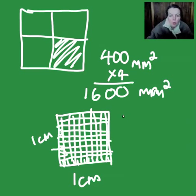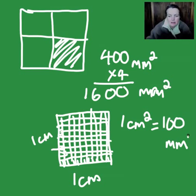So in one centimeter square, and there it is, it's a square, and it's one centimeter that way and one centimeter that way. In one centimeter square, there are a hundred millimeters square.